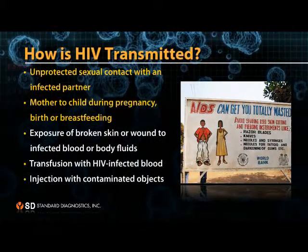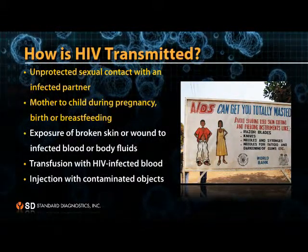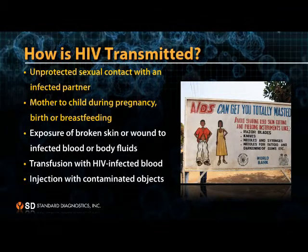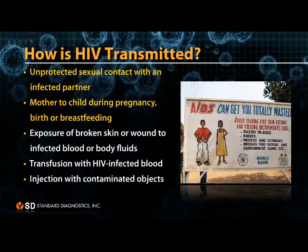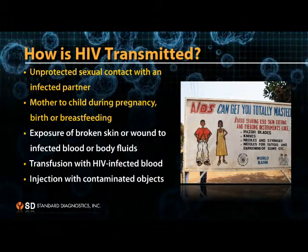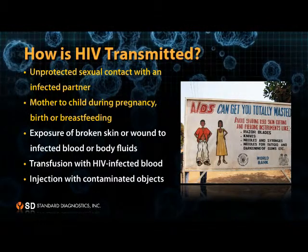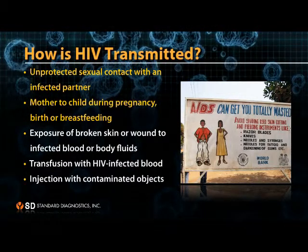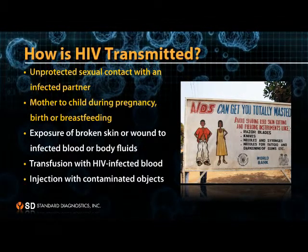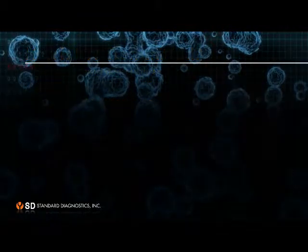People can be infected with HIV by having unprotected sex with an infected partner. HIV can be transmitted from mothers to their babies during pregnancy, delivery, or through breastfeeding. People can also be infected during a transfusion with HIV-infected blood.